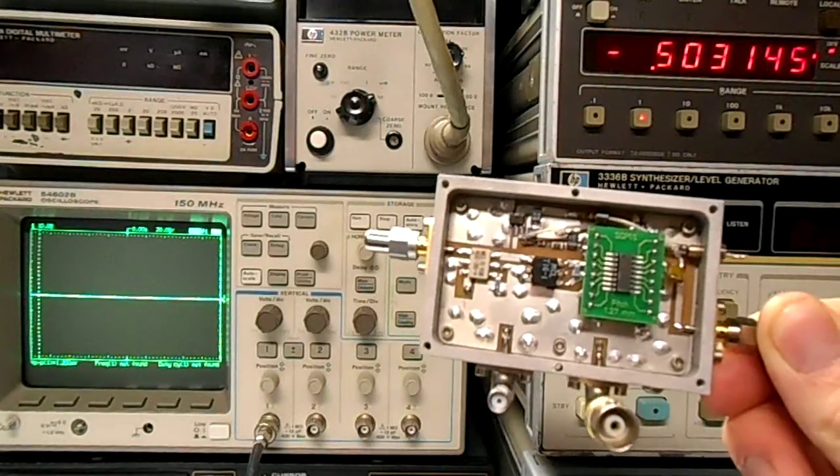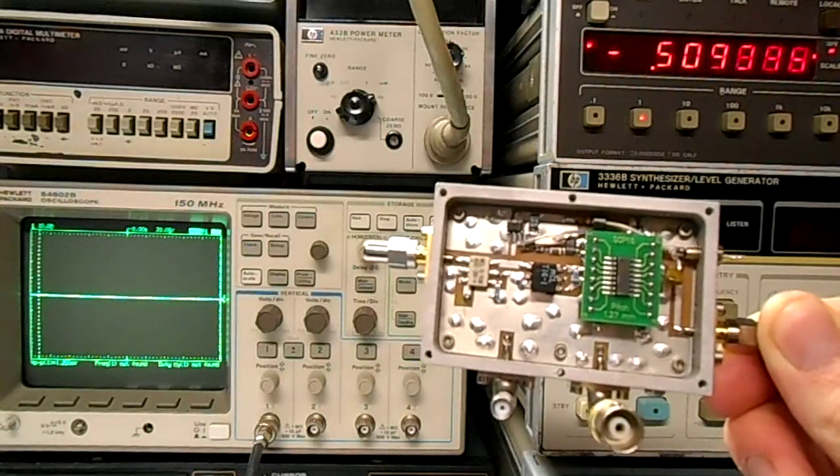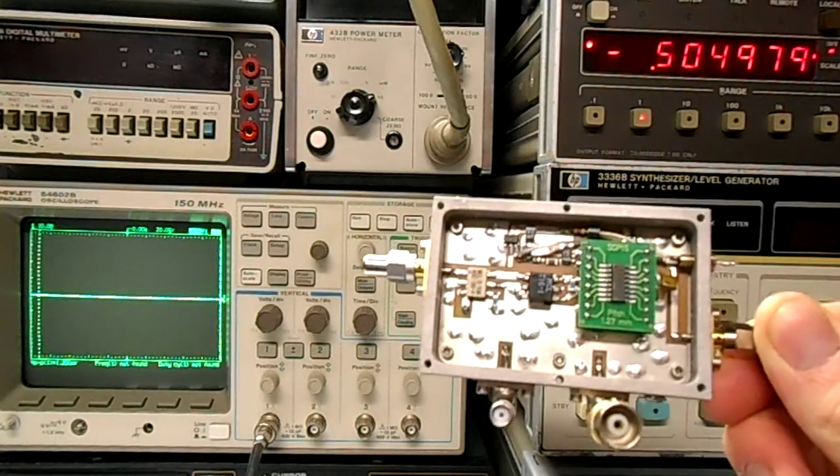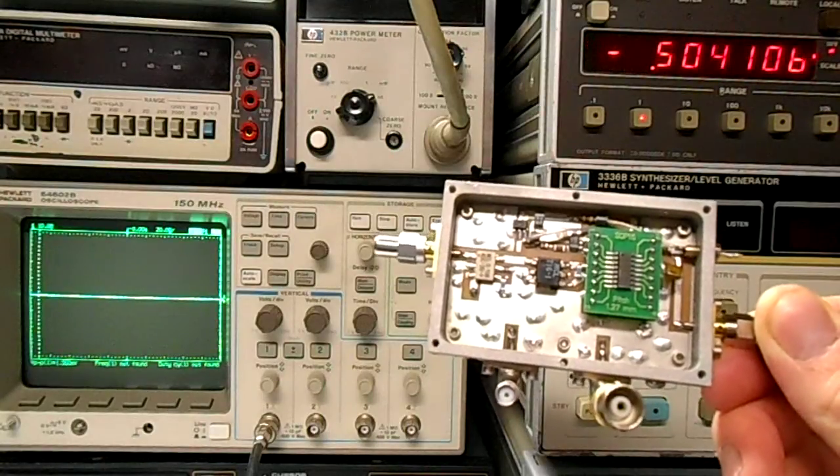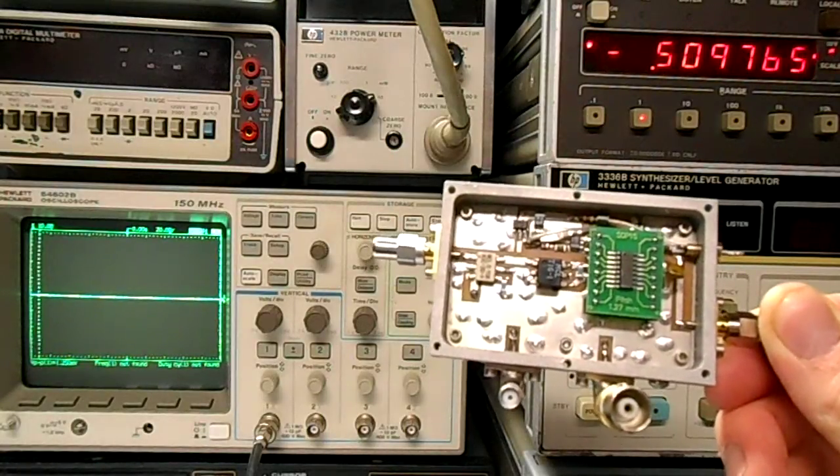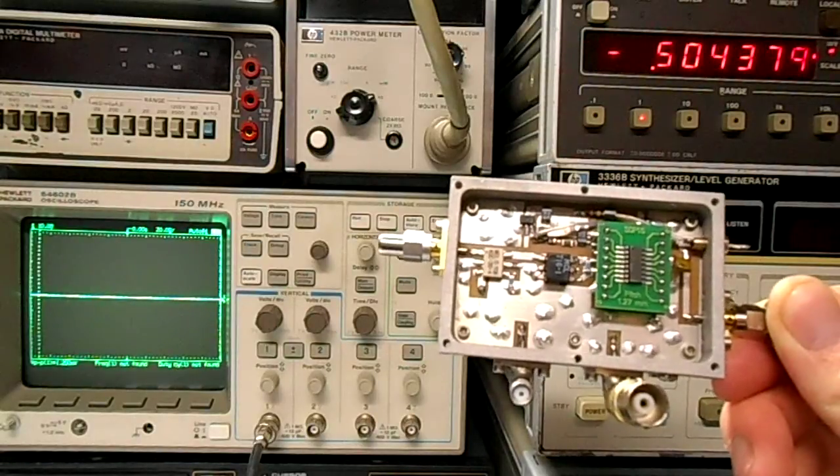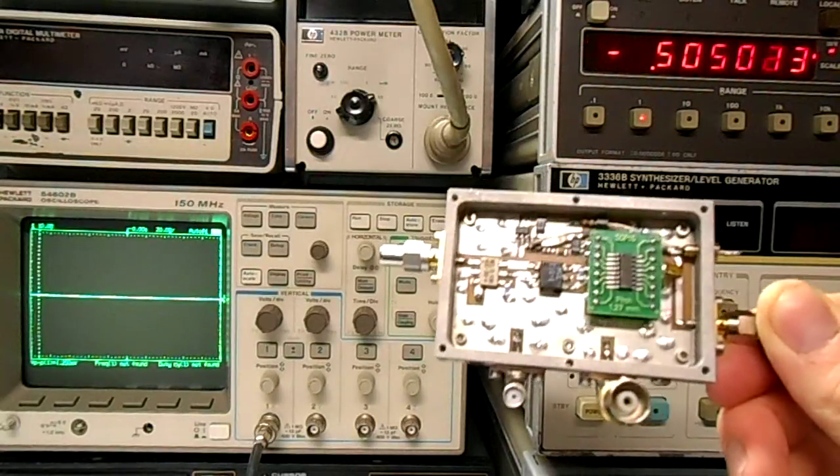It operates from approximately negative 100 dBm to plus 10 dBm. That corresponding voltage then is about 0.4 volts for negative 100 dBm and 2.4 volts for plus 10 dBm.